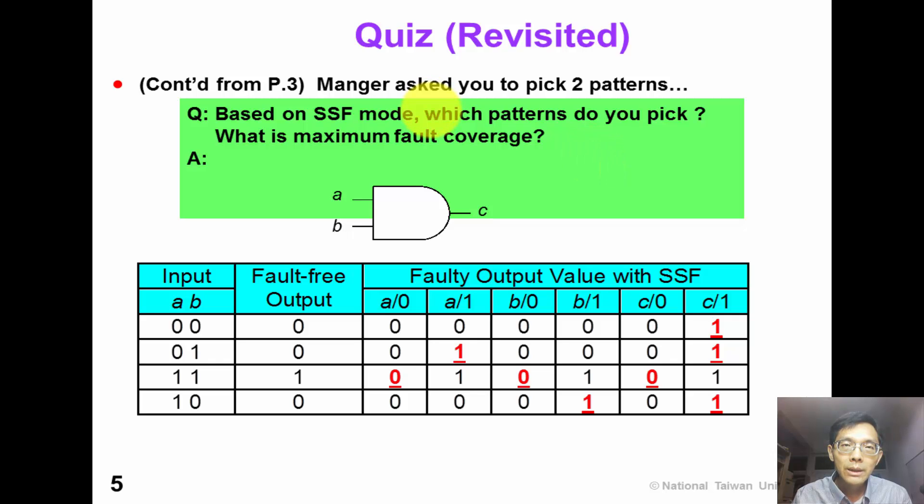So now, let's revisit the quiz. At the beginning of this chapter, the manager asks you to pick only 2 patterns. Now, based on the single stuck-at fault model, which 2 patterns do you pick? And what's the maximum fault coverage? Have you got it?